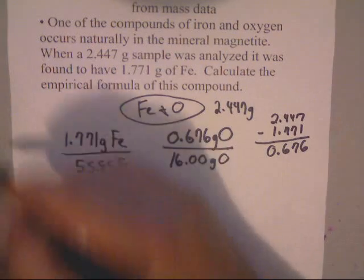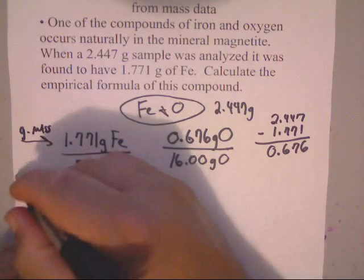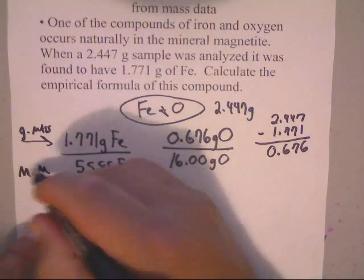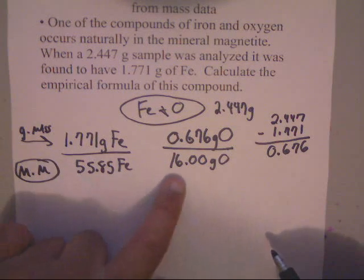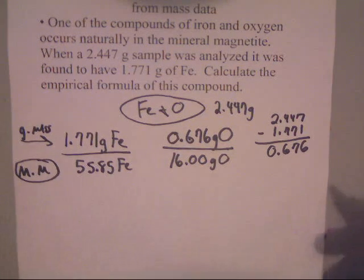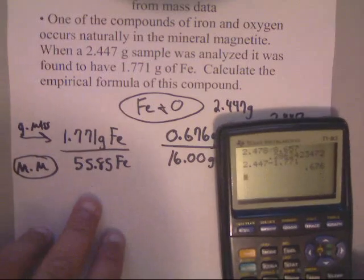Remember, this was the given mass. And this is the molar mass that we found off the periodic table. Iron is 55.85, oxygen is 16.0. So anyway, what that's going to give us is the respected moles.